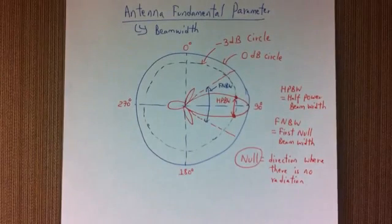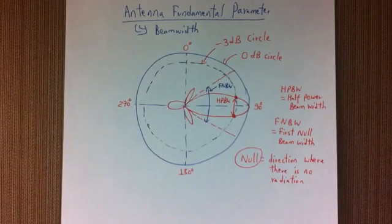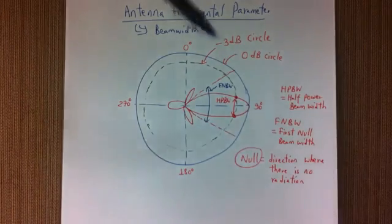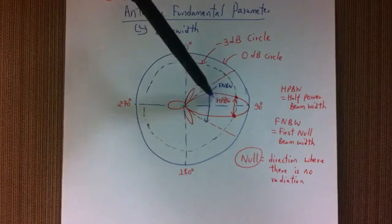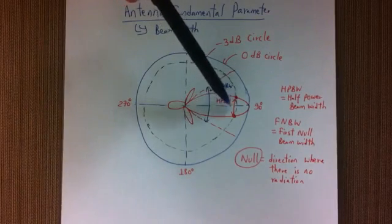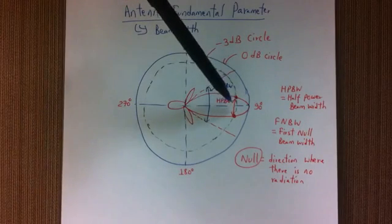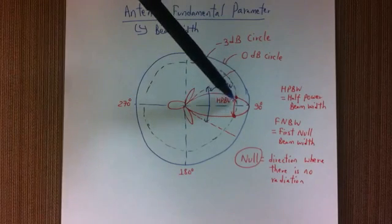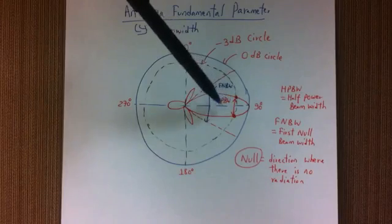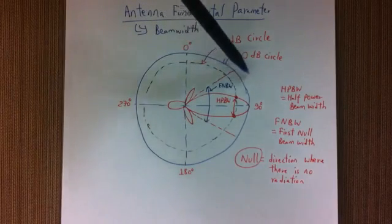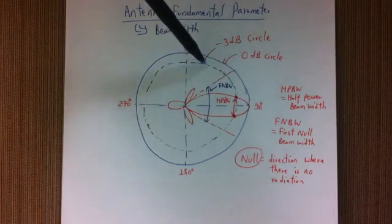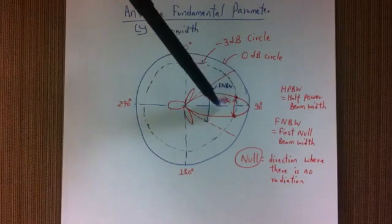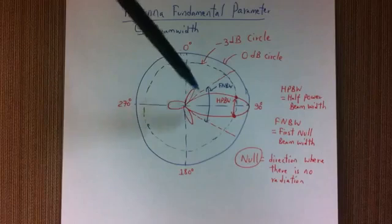Beam width of an antenna is basically the width of a radiation pattern of an antenna at different points. First we have half power beam width, HPBW, and this is basically at negative 3 dB point the width of this beam is called half power beam width. So if you have this 0 dB circle and then this circle is negative 3 dB, then from this point to this point is your half power beam width.